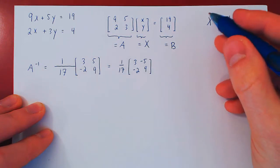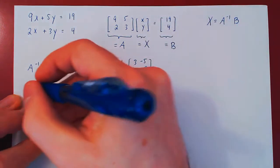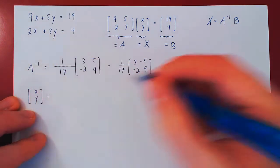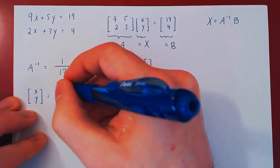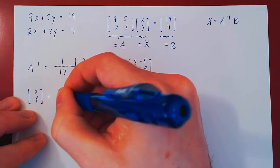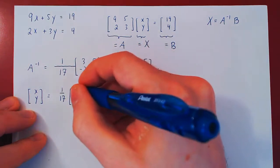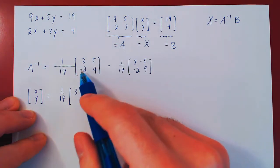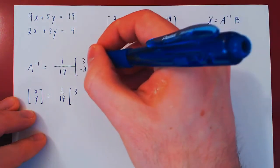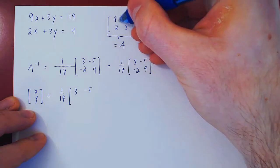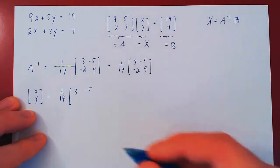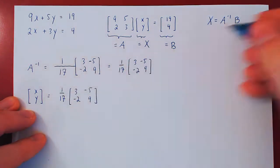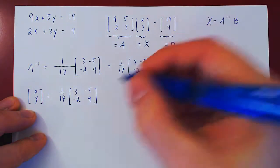And now we have A inverse, so we're good to go. So our vector variables, x, y, equals A inverse times B. 1 over 17. Oops, I forgot to negate the 5 here. We swap these entries and we negate these two. So A inverse times B, 19, 4.